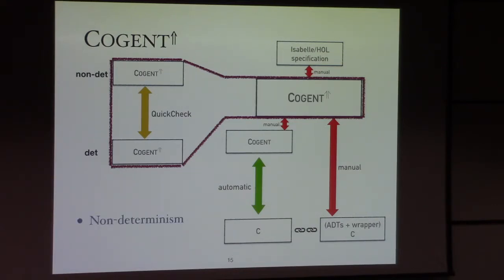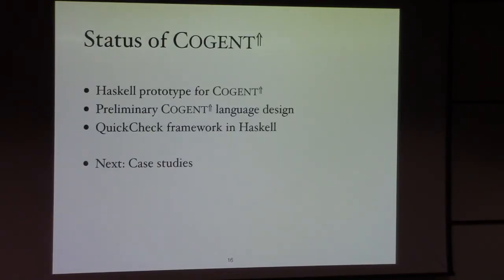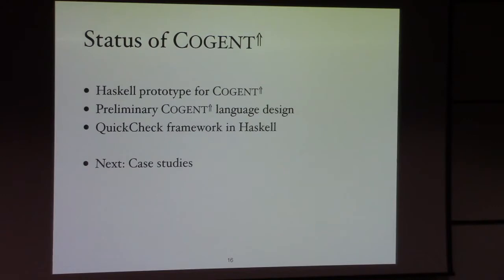We want to support non-determinism in the Cogent-up language so that this common setting can be simplified. Where are we at the moment? It's very early stage work. At the moment, we use Haskell as a prototype instead of the real Cogent-up language. We use Haskell to do a proof-of-concept. We have a preliminary Cogent-up language design but it's more in a conceptual state.